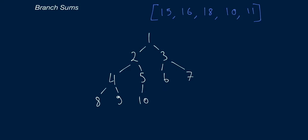This problem is also fairly simple to solve. We can do so recursively with little to no trouble. The main idea is that we are going to be calling a recursive function on each node in the tree, starting at the root node, that calculates the branch sums for the tree rooted at that node. But we keep track of a running sum — meaning the sum obtained by adding values from nodes above us at every recursive call.